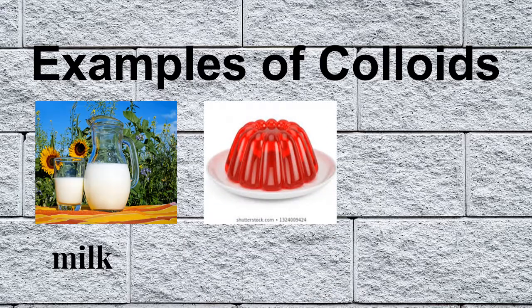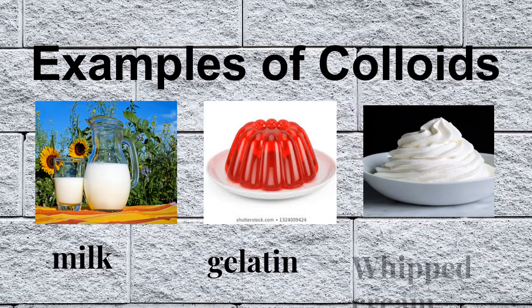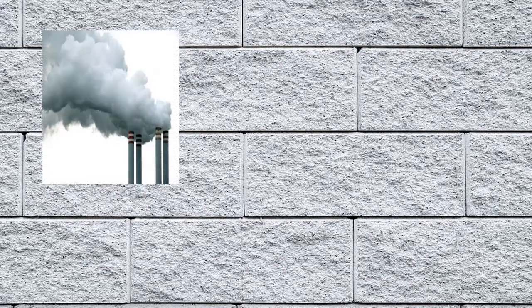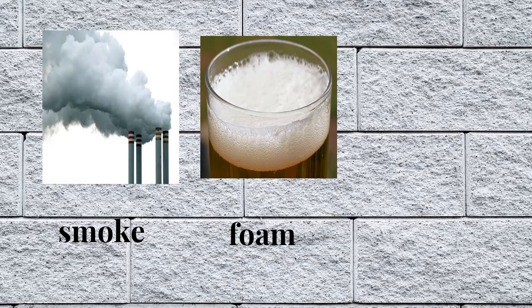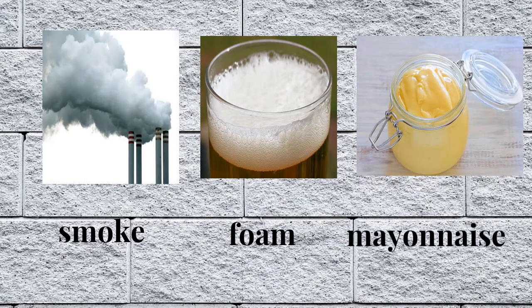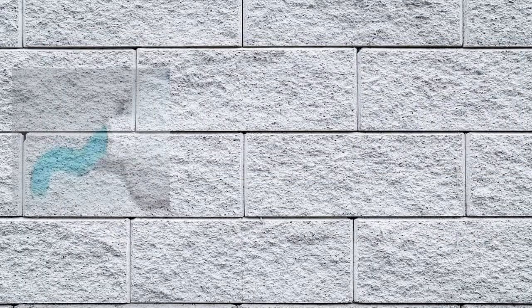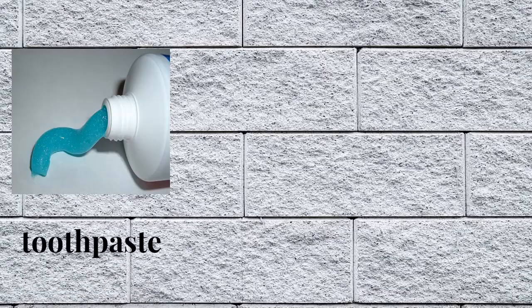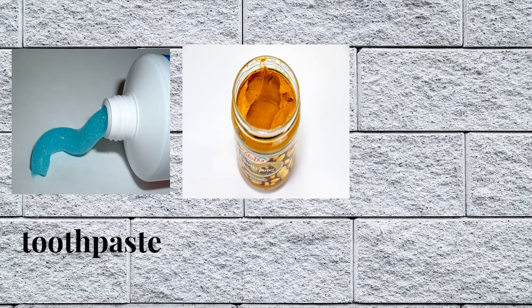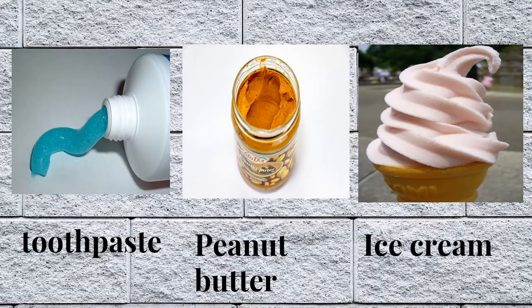Here are some examples of colloids: milk, gelatin, whipped cream, smoke, foam, mayonnaise, toothpaste, peanut butter, and ice cream. As you can see, most colloids can be used as food, for body care, and for cleaning.